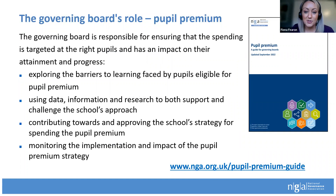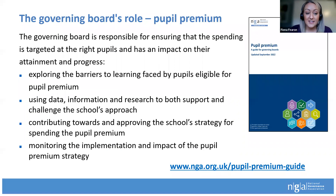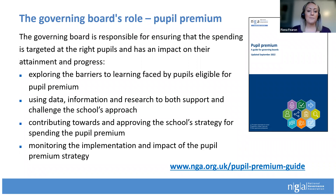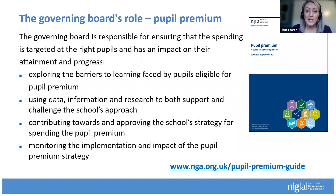We also have our pupil premium guidance — a guide for governing boards to really explore some of those barriers faced by those who are eligible for pupil premium and how to use that data effectively in addressing that, and also contributing to and approving the school strategy for spending the pupil premium. There was a comment earlier about who the pupil premium should be spent on. The DfE does say it's for specific pupil groups defined by socioeconomic status. However, it does say it can be used to benefit other pupils as long as schools feel it's necessary and the approaches being put in place will equally benefit those who really need it.